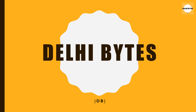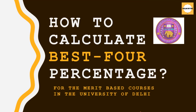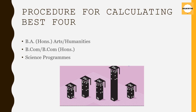Hey guys, my name is Arya and welcome to Delhi Bites. In this video, we will understand the whole procedure for calculating your best 4%. Delhi University has set different parameters for each course — which subjects you have to give priority to, which are compulsory, and which subjects can give you an advantage or disadvantage. The video will be divided into 3 parts: first for Arts and Humanities courses, second for BCom and BCom Honors, and third for Science programs.